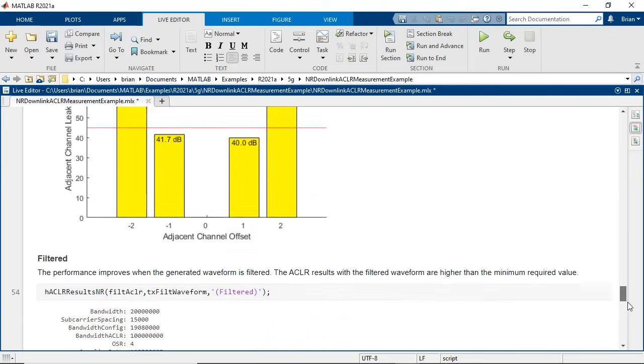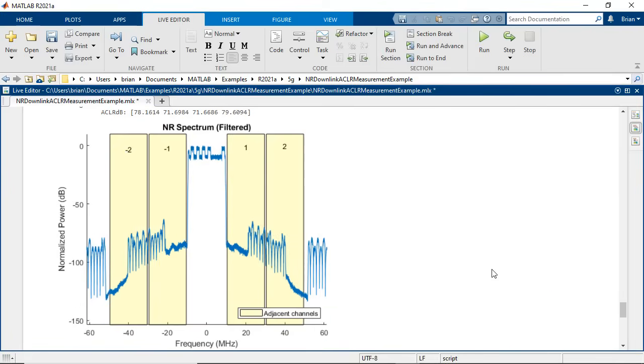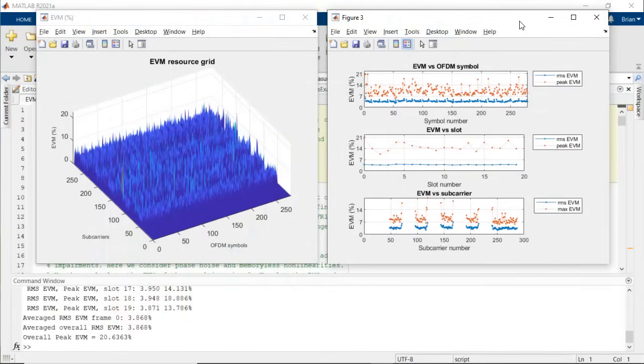You can analyze the received OFDM signals with metrics such as EVM, ACLR, bit error rate, block error rate, and throughput, which will help you verify the compliance of your wireless system to the standard specifications.